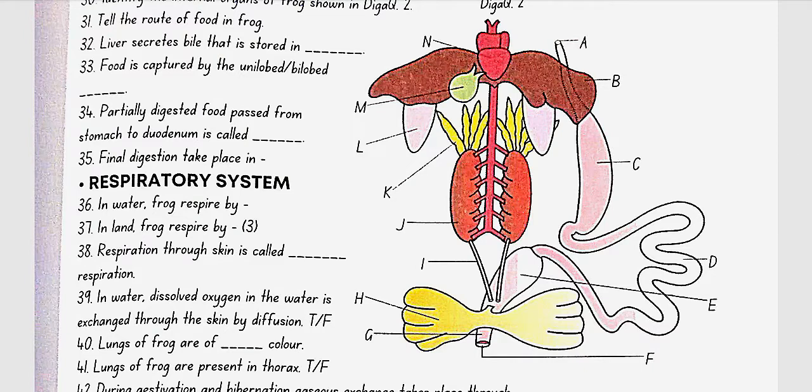A is the esophagus, B liver, C is stomach, D is intestine, E is rectum, F is cloacal aperture, G is cloaca, H is urinary bladder, I is ureter, J is kidney, K is fat bodies, L is lung, M is gallbladder, N is heart.